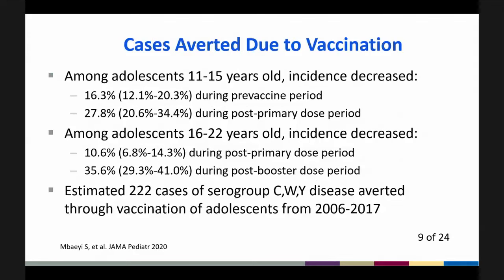Because the decline in meningococcal disease incidence began prior to the introduction of vaccine, measuring the association between vaccination and disease incidence is challenging, but has been modeled using surveillance data. Among adolescents 11 through 15 years old, incidence decreased 16.3% during the pre-vaccine period and 27.8% during the post-primary dose period. Among adolescents 16 through 22 years old, incidence decreased 10.6% during the post-primary dose period and 35.6% during the post-booster dose period. An estimated 222 cases of serogroup C, W, or Y disease have been averted through vaccination of adolescents from 2006 through 2017.